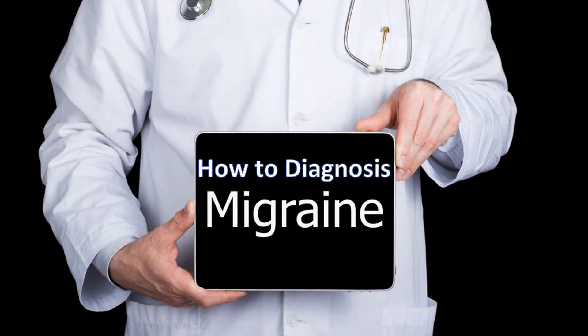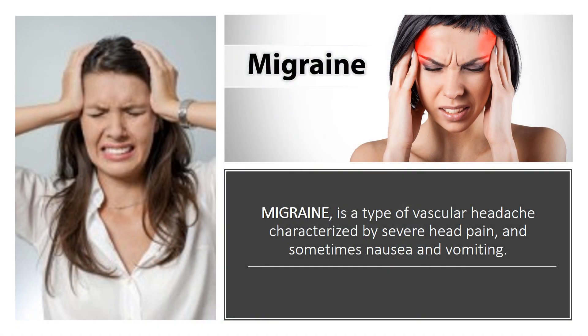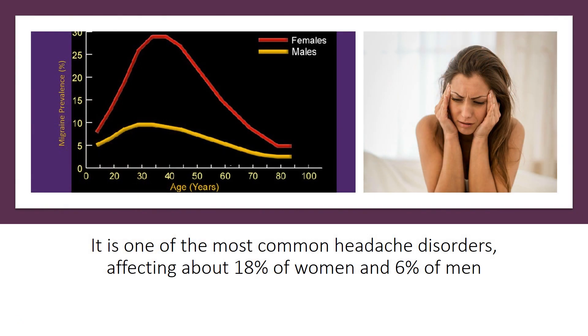How to diagnose migraine? Migraine is a type of vascular headache characterized by severe head pain, and sometimes nausea and vomiting. It is one of the most common headache disorders, affecting about 18% of women and 6% of men.